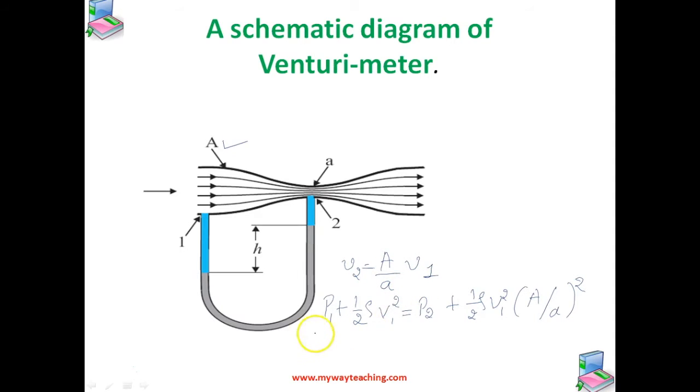So we can write p1 minus p2 as 1/2 rho v1 squared times A by a whole squared minus 1.